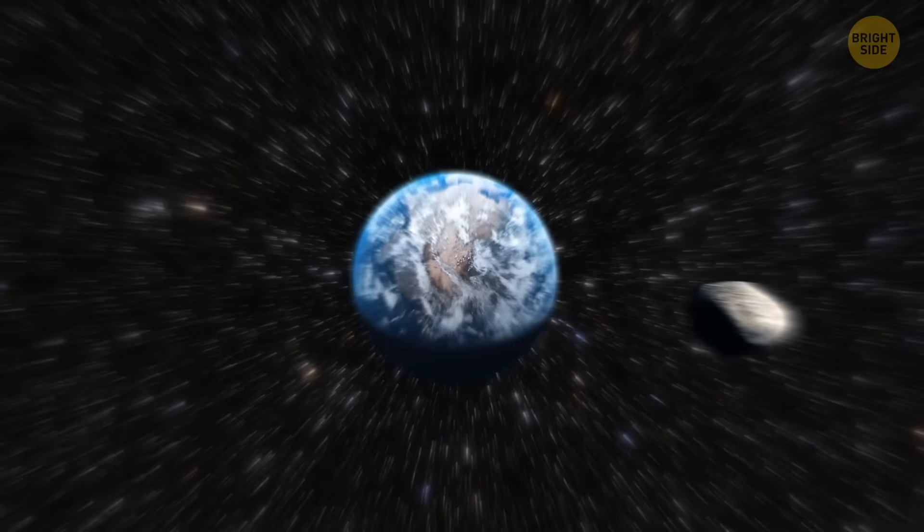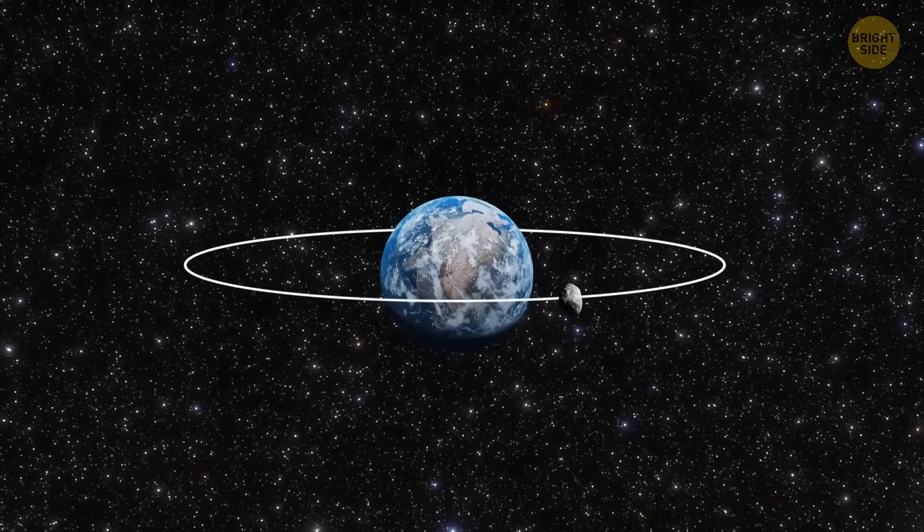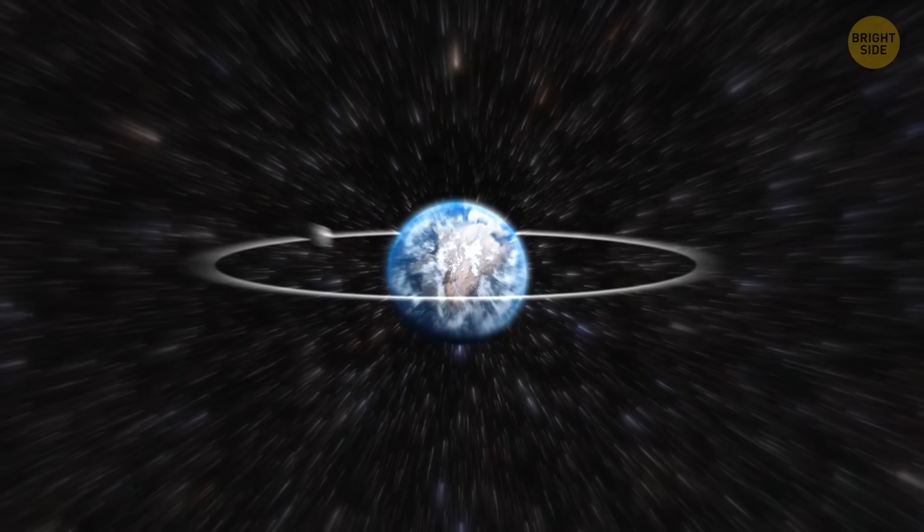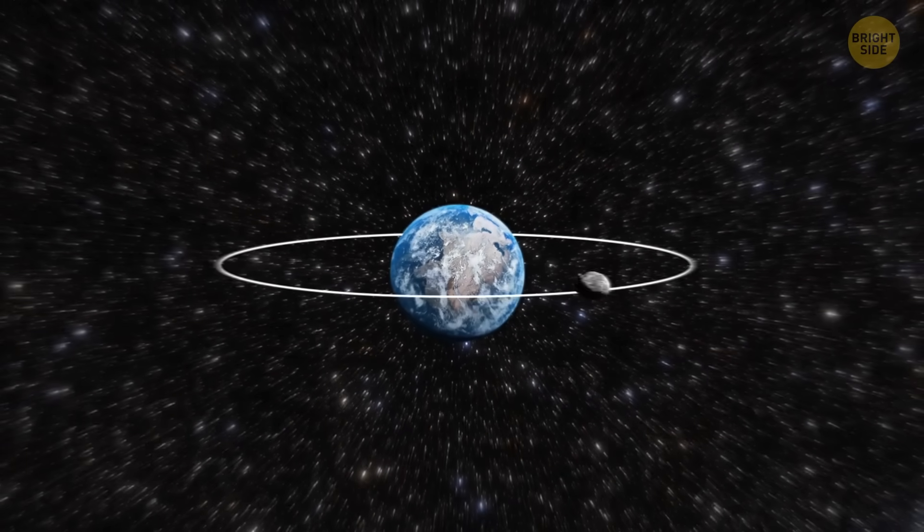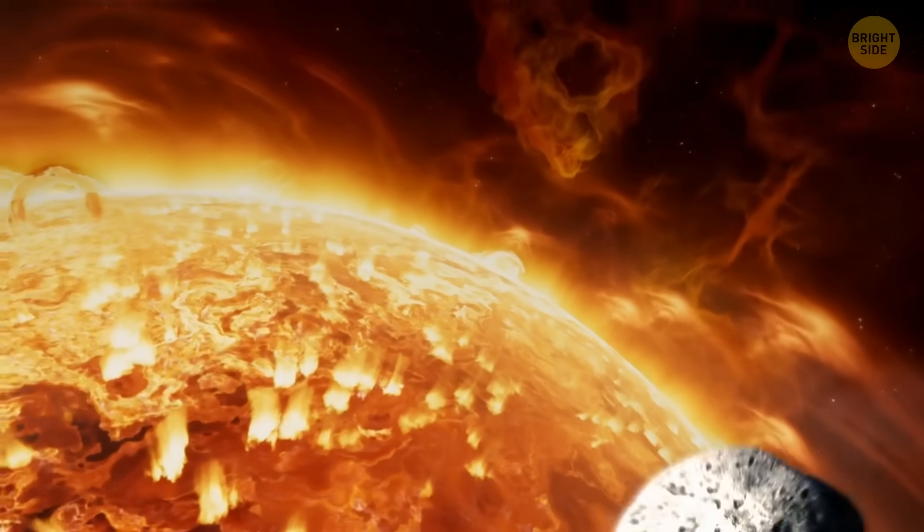In 2024, Earth was joined by a mini-moon that orbited around our planet for two months. It hung around, made a few laps, and then, like every polite guest, it left. It went back to resume its trip around the Sun.